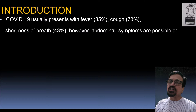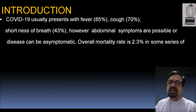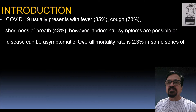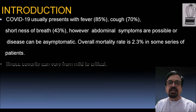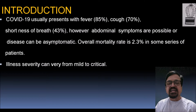COVID-19 usually presents with fever in 85% of cases and cough in 70%, and shortness of breath in 43%. However, non-specific abdominal symptoms are possible or the disease can be asymptomatic. Often, a drop in oxygenation was the only presentation with no constitutional symptoms — no fever, no cough, no breathlessness, and no abdominal symptoms. Overall mortality is 2.3% in some series, though this differs by place and institution. As days progress, this statistic is improving — mortality is now less than 2.3%.